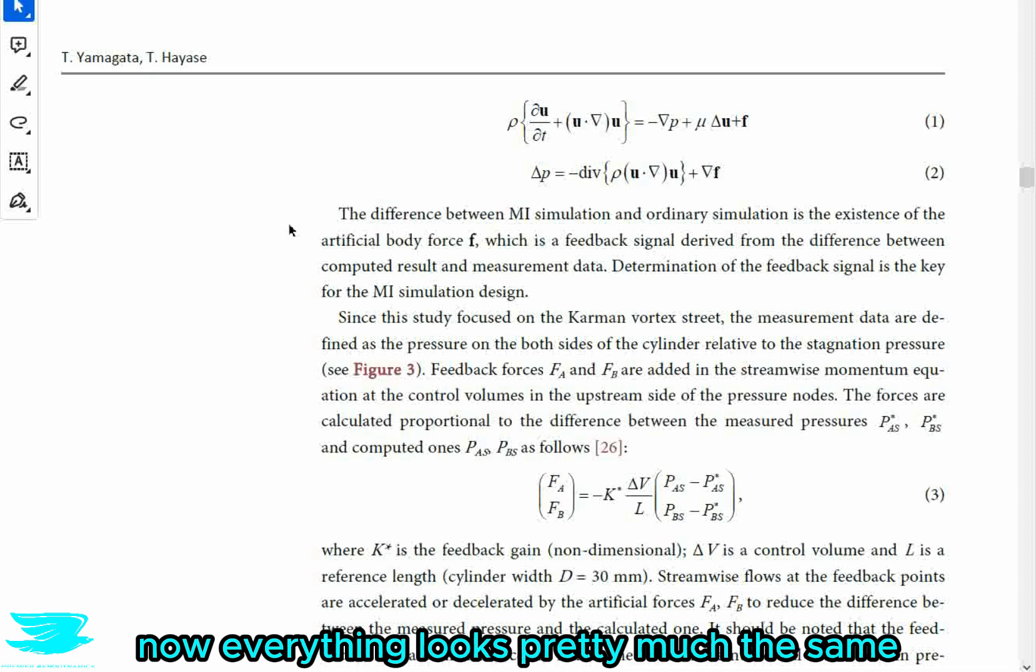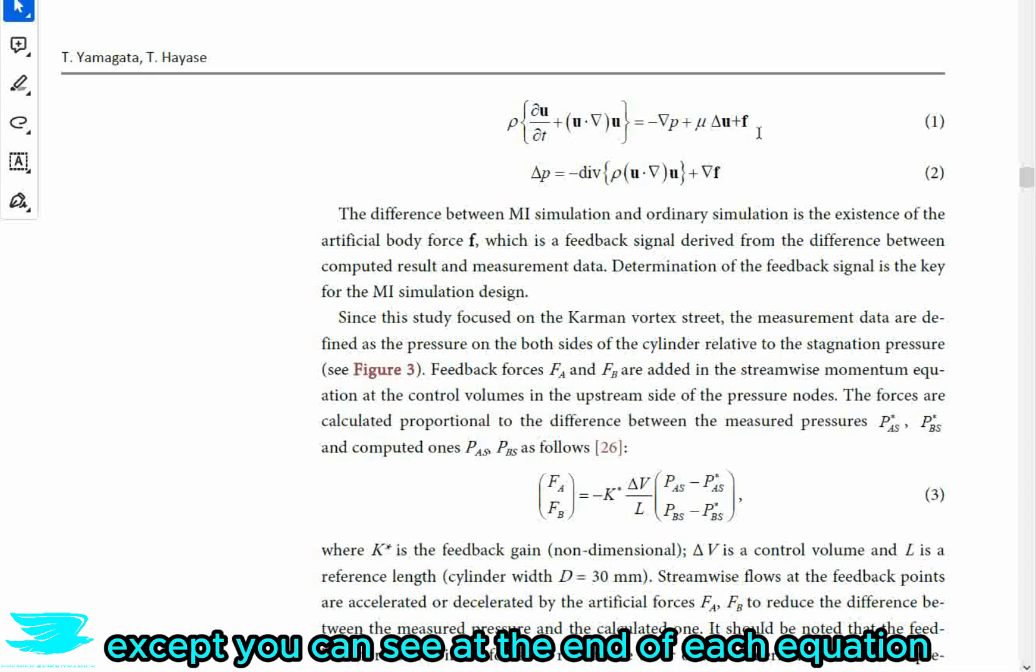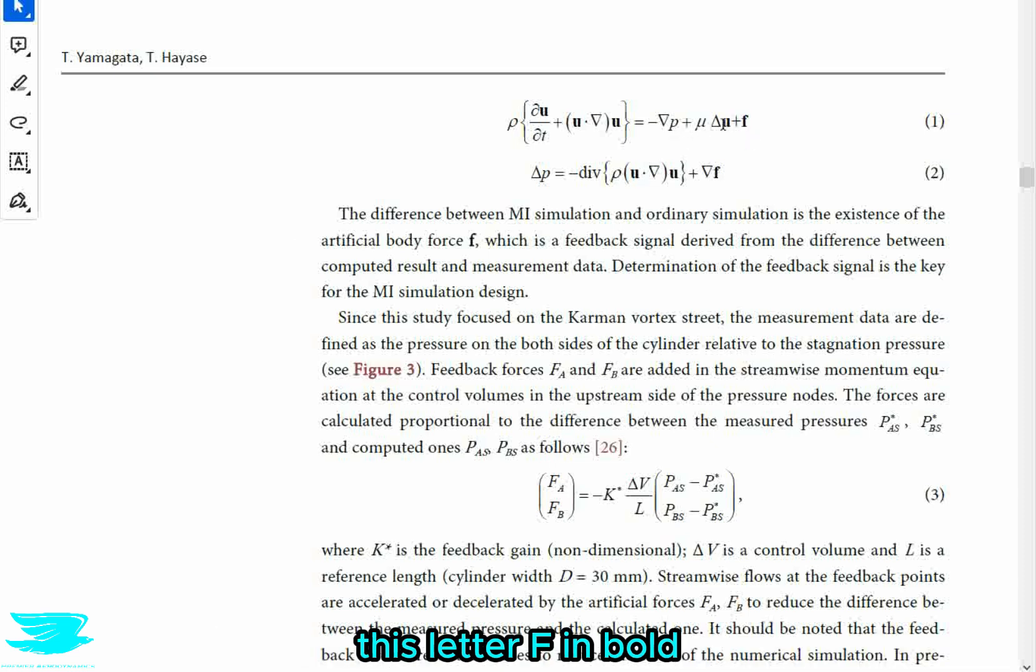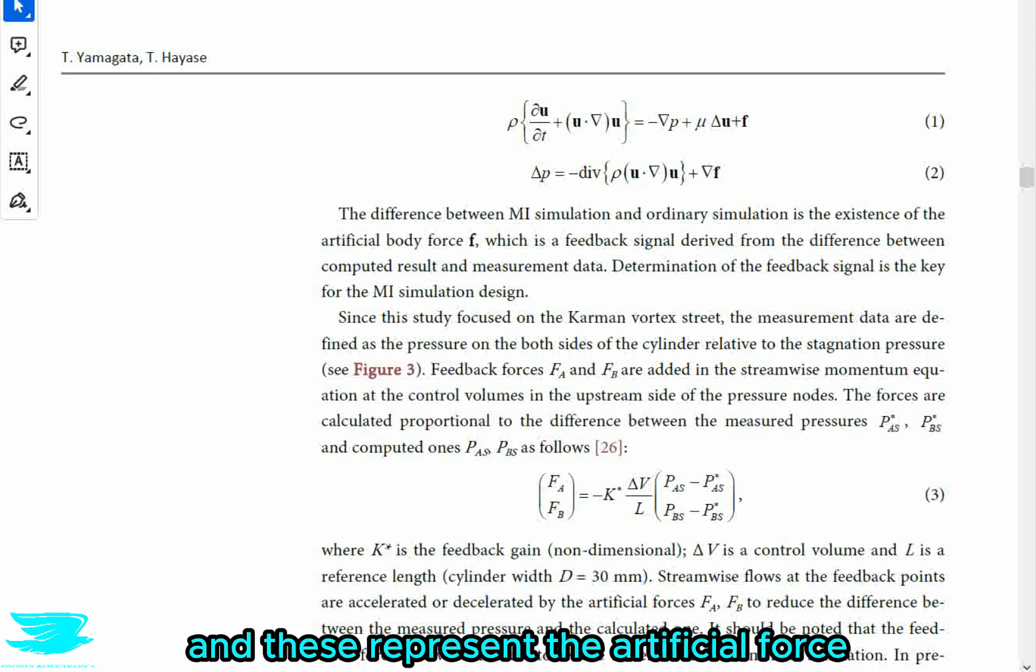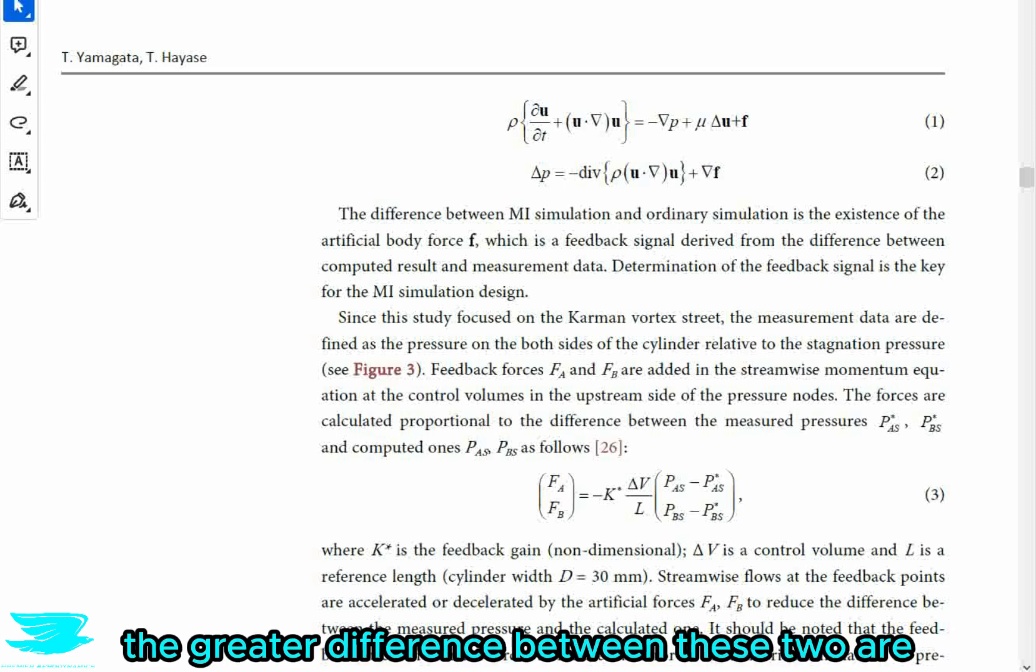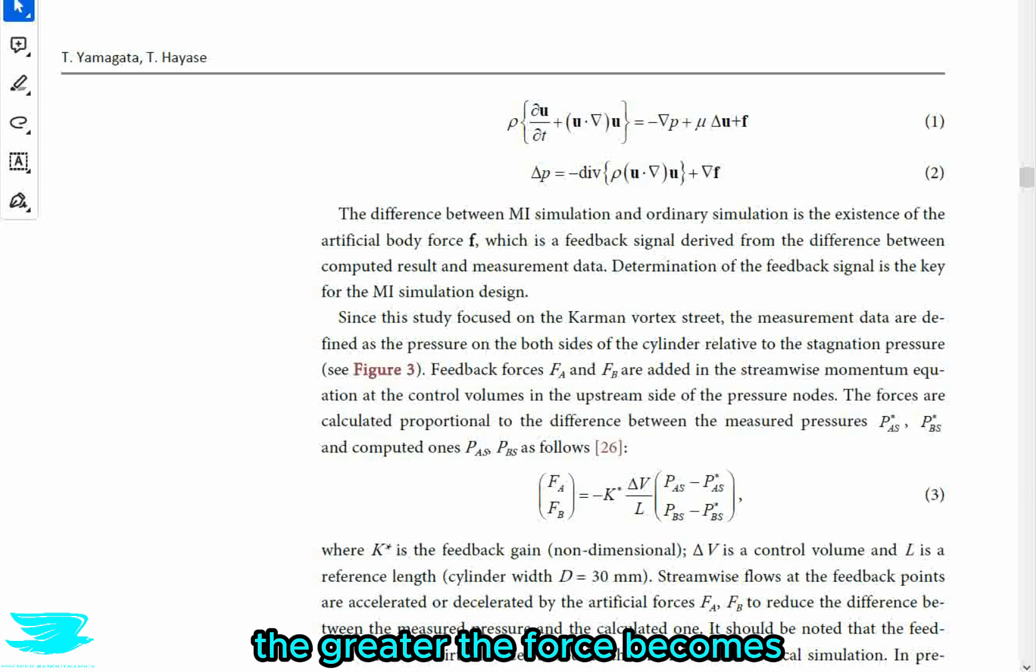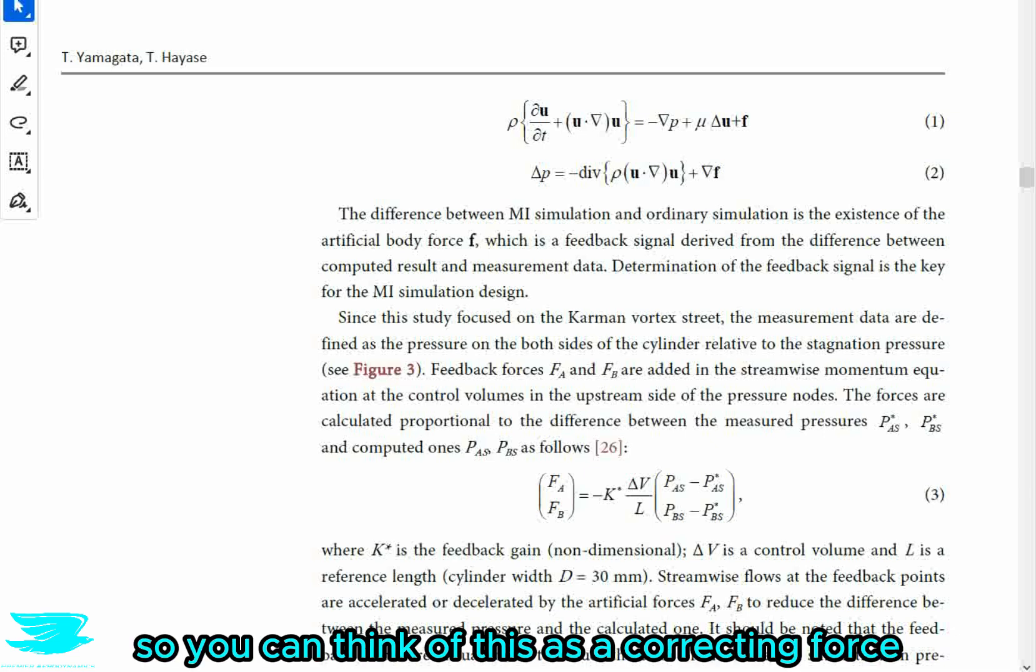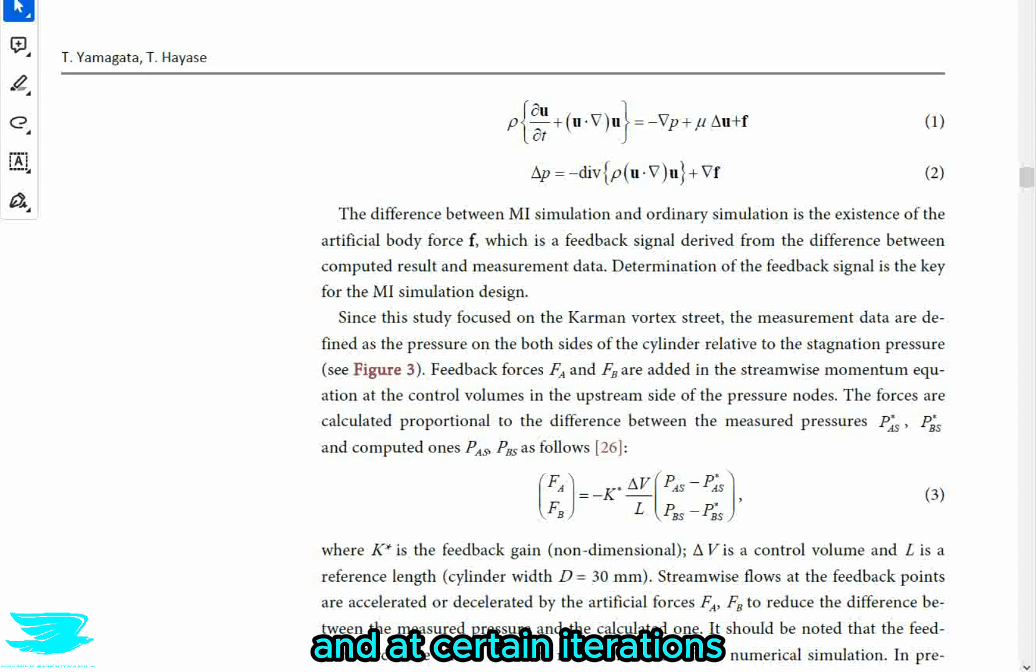Now, everything looks pretty much the same, except you can see at the end of each equation, this letter F in bold. And these represent the artificial force added to these equations based on how different the current simulation is from the measurement results. The greater the difference between these two are, the greater the force becomes. So you can think of this as a correcting force kind of thing. So if you have your CFD and you run a certain iteration, you look at one point and the value is a certain amount, and then the experiments say it should be another amount, that creates this correcting force, this F.